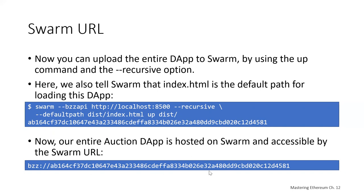The answer is no. In my next presentation, I'm going to talk about Ethereum's Name Service, which will allow us to have nice and friendly URLs for our decentralized apps located in a decentralized storage solution like Swarm or IPFS. So tune in next time when we talk about ENS, the Ethereum Naming Service.